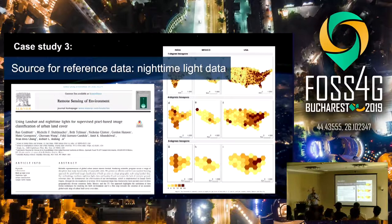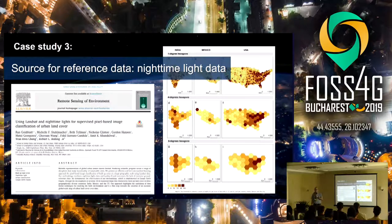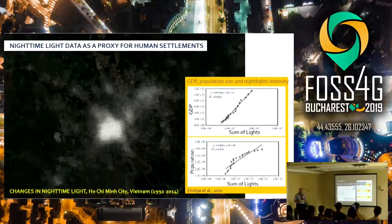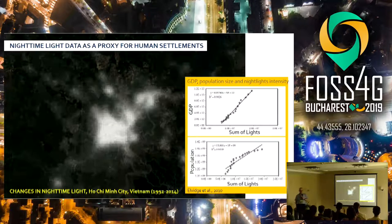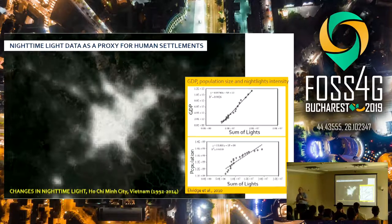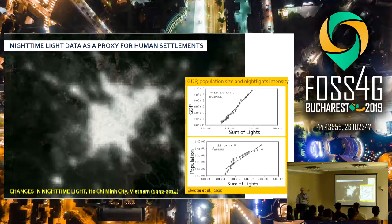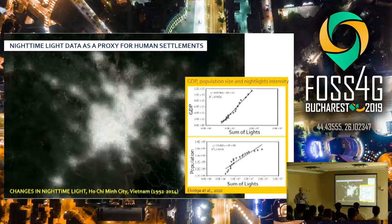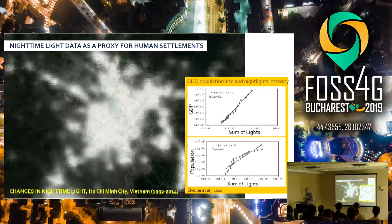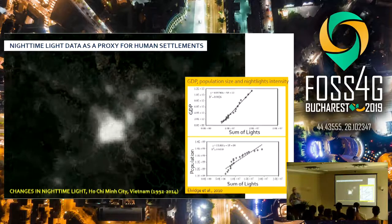The third case study — which I'm most proud of — uses nighttime light data as a source to extract labeled data to map built-up land cover in high resolution. The idea is that nighttime lights are a very good proxy for GDP, population size, and they are also used to map urbanization processes and changes in city boundaries.